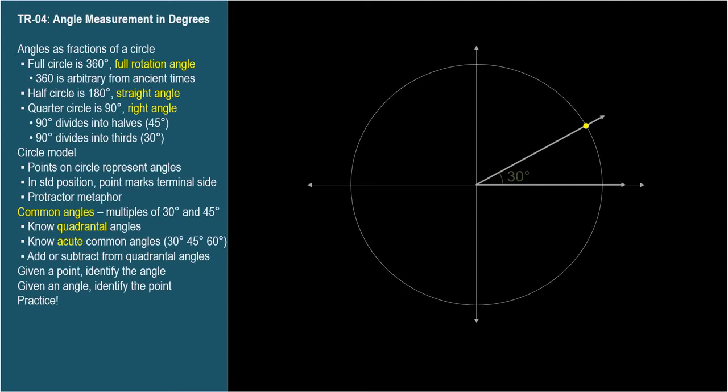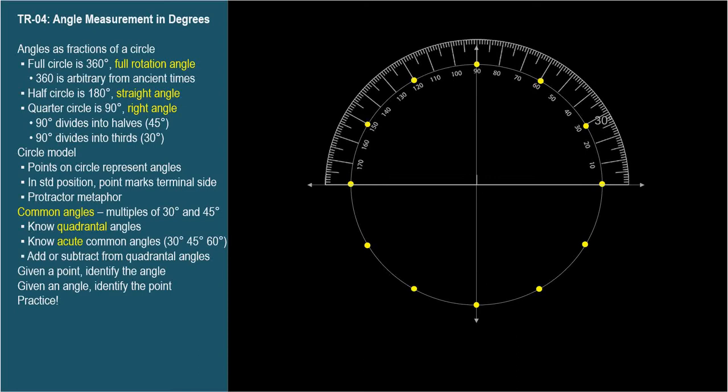A point on a circle can represent an angle, the standard position angle whose terminal side passes through the point. For example, this point represents a 30 degree angle, because if we put a 30 degree angle in standard position, the terminal side passes through it. This is exactly how a protractor works.